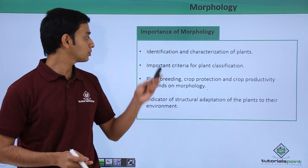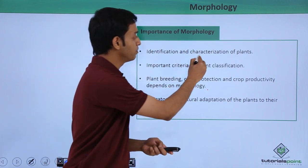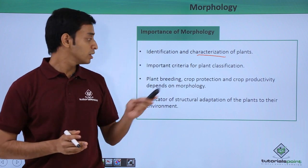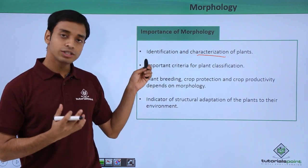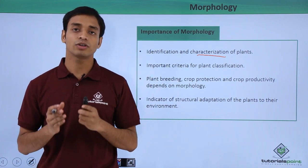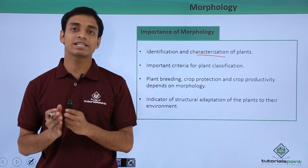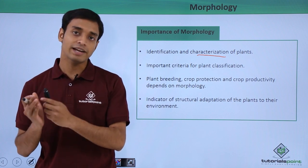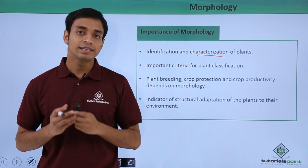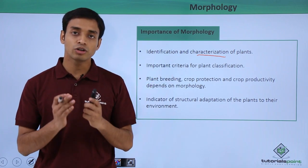Now let us understand why we need to study morphology, or what is the importance of morphology. Morphology helps in the identification and characterization of plants. Because of this, morphology is an important criterion used for the classification of plants — these are the first characteristics that can be seen externally.